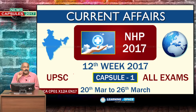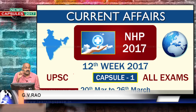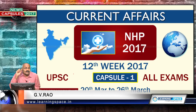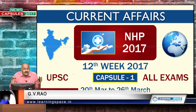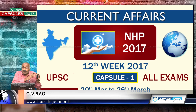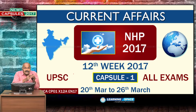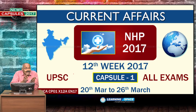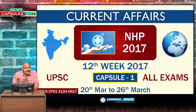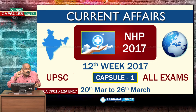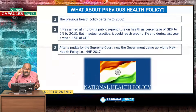Welcome back to the first capsule. This is National Health Policy 2017, divided into four parts. The first part talks about salient features. The second part talks about government's version — the government treats this as a four-pillar mechanism. The third part talks about present difficulties, and the last part talks about challenges. This will be sufficient to answer any question on National Health Policy.